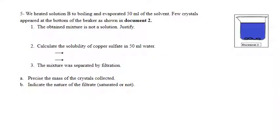Part 5: We heated solution B to boiling and evaporated 50 milliliters of the solvent. So we evaporated 50 milliliters. Remember, B had 20 grams solute and 100 milliliters solvent. After evaporating 50 milliliters, what remains?